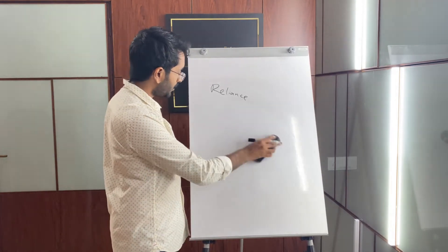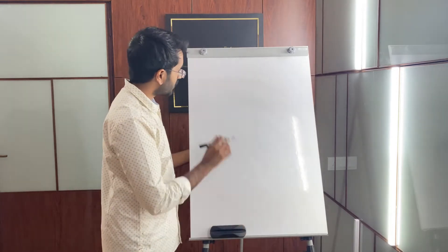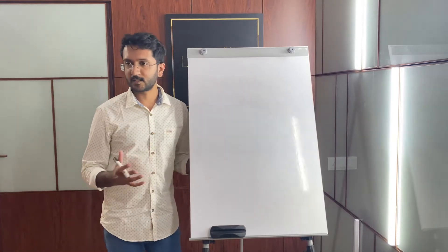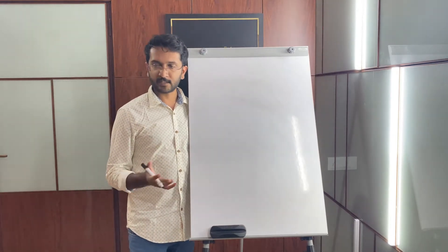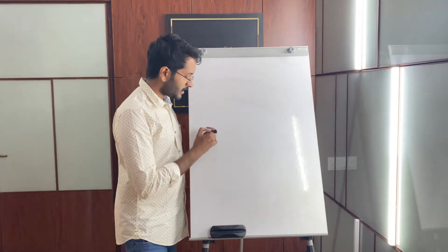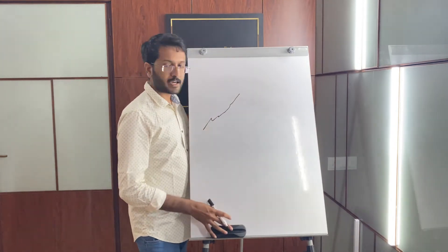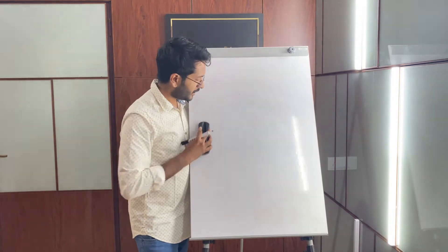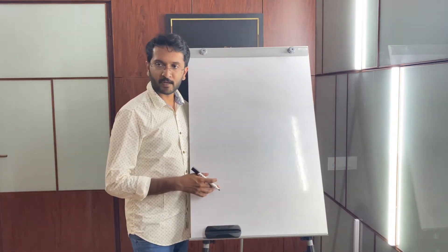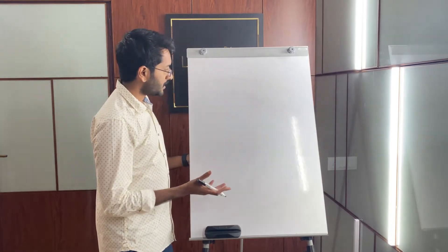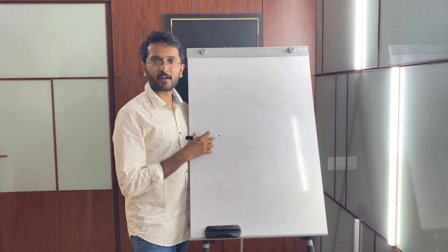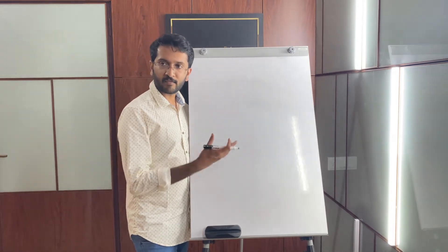We started out by understanding that 30% of the time is when markets trend, and the rest 70% of the time markets are supposed to be sideways. Then we learned that a typical uptrend shows a higher high, higher low formation, and a typical downtrend shows a lower low, lower high formation. The same chart or the same stock would have different trends in different time frames.